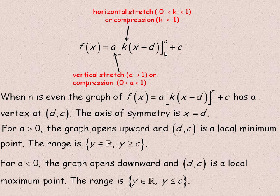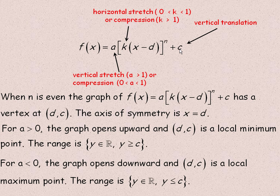The constant inside the power bracket tells you the horizontal stretch or compression. It's a horizontal compression if that number is greater than 1 — like the 3 in the previous example. It's a horizontal stretch if k is between 0 and 1, like one half or three quarters. The value 'c' at the end is the vertical translation — it moves the graph up or down with the same sign as c. So plus 5 moves it up 5; minus 10 moves it down 10.